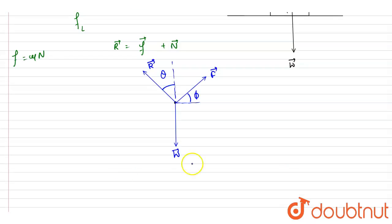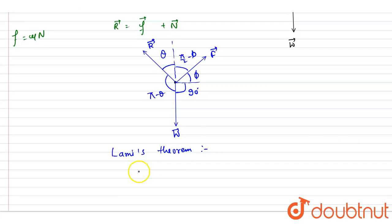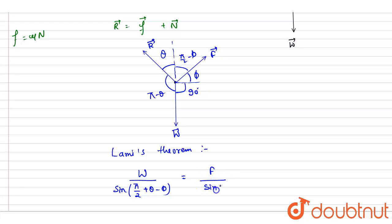Using Lami's theorem — also called the sine rule — by making a closed triangle of the three forces, we can apply this theorem. The angle in the triangle opposite to W is (90 + theta − phi), opposite to F is phi, and the remaining angle is 90 degrees. So from Lami's theorem: W / sin(90 + theta − phi) = F / sin(phi).